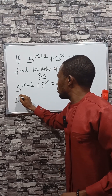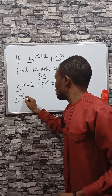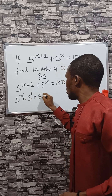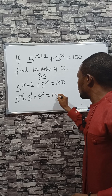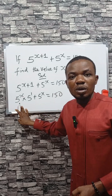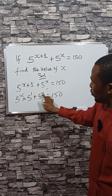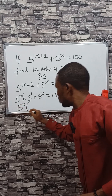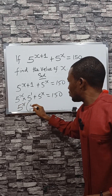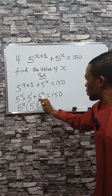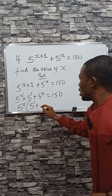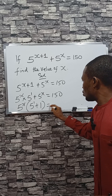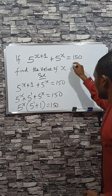We split this to be 5 raised to the power x times 5 raised to the power 1, plus 5 raised to the power x, equals 150. What is common here is 5 raised to the power of x, so we can factor that out. That leaves us with 5 raised to the power 1, plus 1, because if you divide this by this you have 1, equals 150.